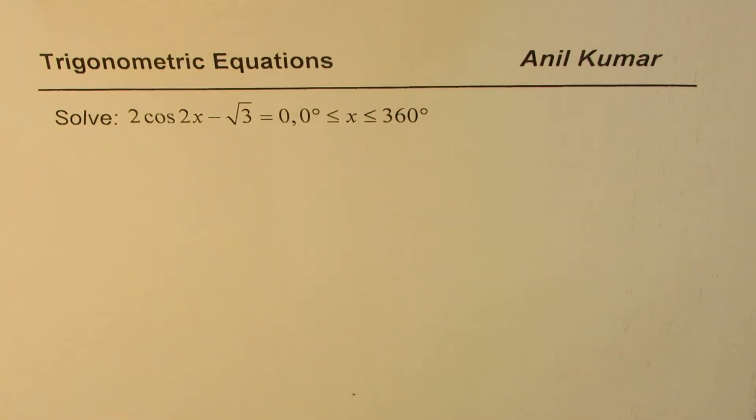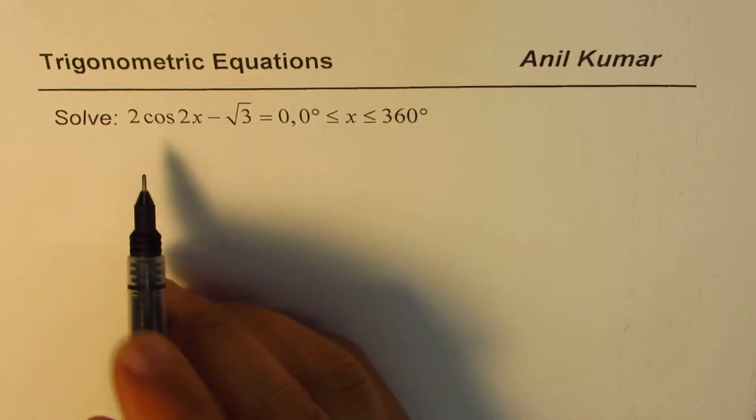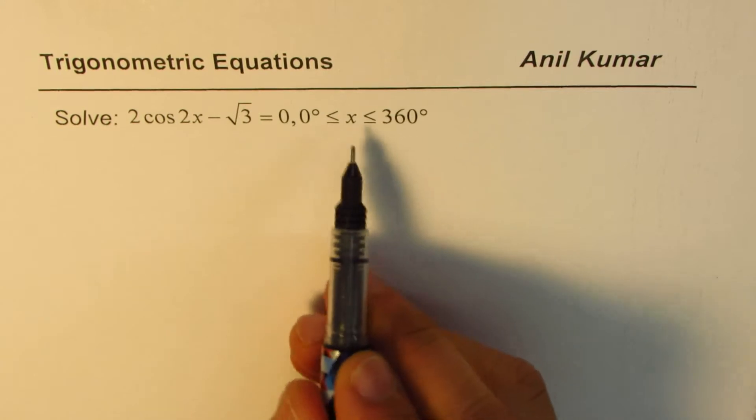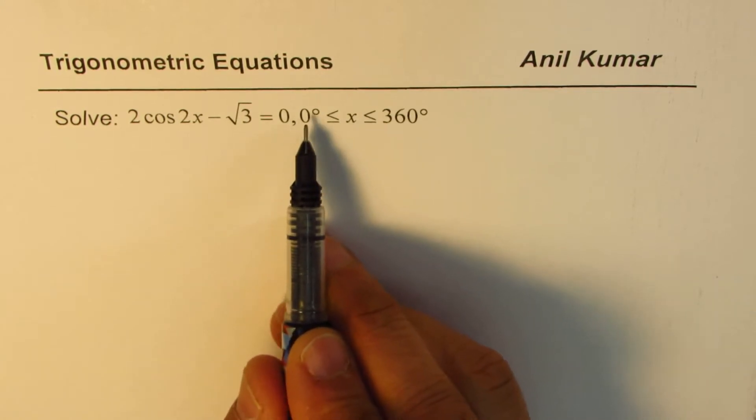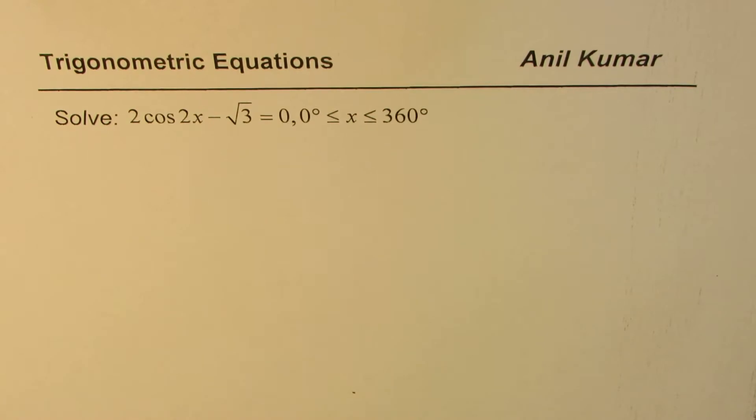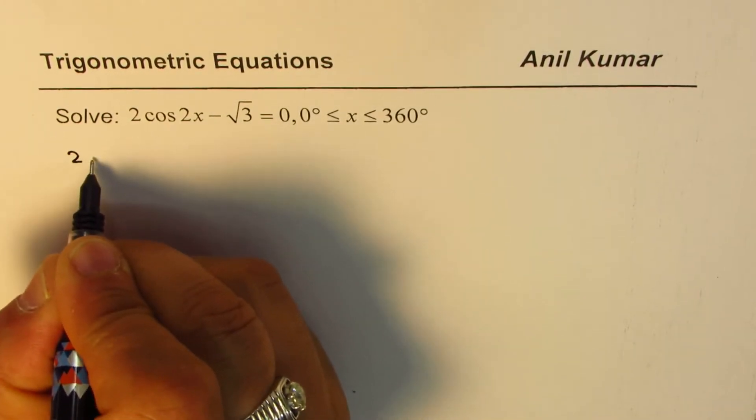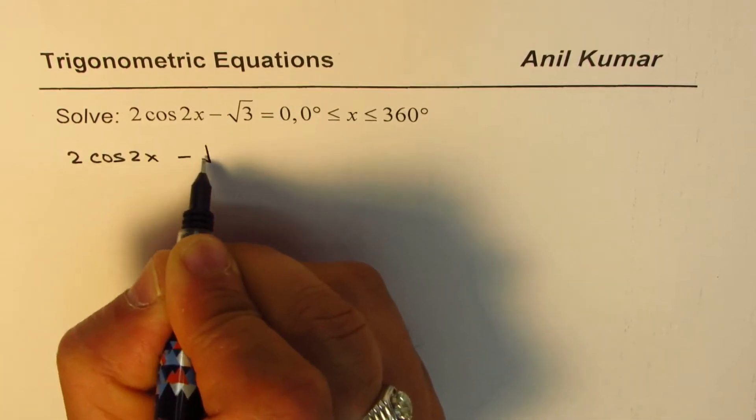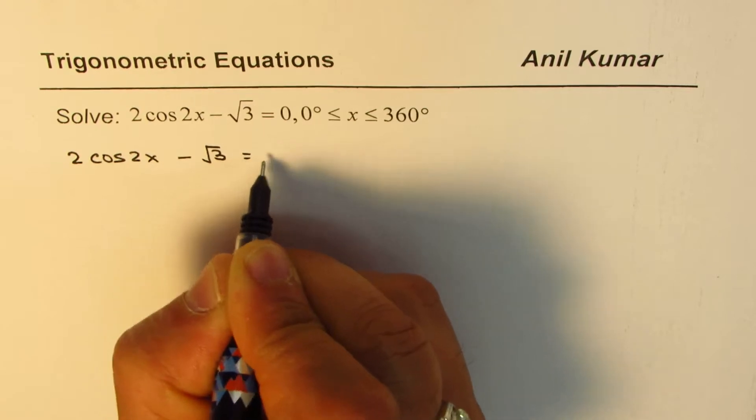I am Anil Kumar sharing with you a solution of trigonometric equations. The question here is 2 cos 2x minus square root 3 equals to 0, where x is between 0 degrees to 360 degrees. We are expecting the solution in degrees and the equation given to us is 2 cos 2x minus square root 3 equal to 0.